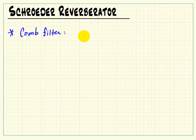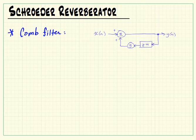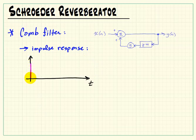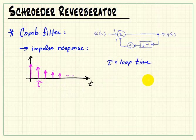I'd like to introduce you to the Schrader Reverberator, and I'll begin by refreshing your memory about the comb filter. The comb filter is a structure based on a delay line and a feedback multiplier that's always less than one. This constantly recirculating structure can accept a single impulse and produce a whole series of decaying impulses on the output. The impulse response of the comb filter shows very distinct spacing between the pulses, and that's the loop time, denoted tau.